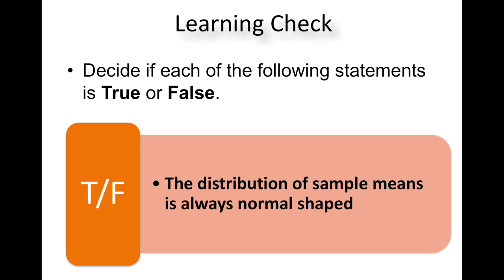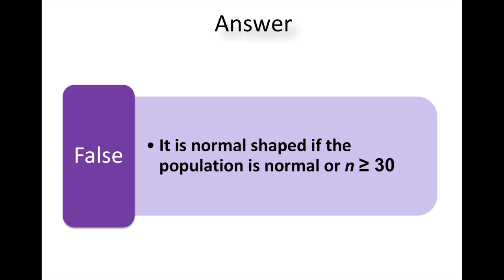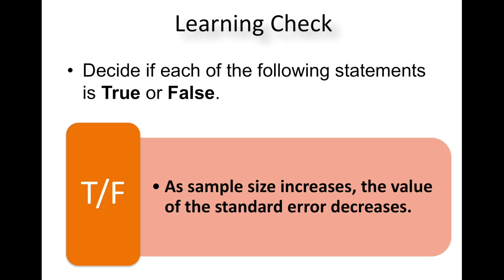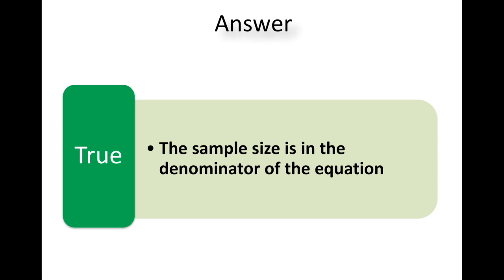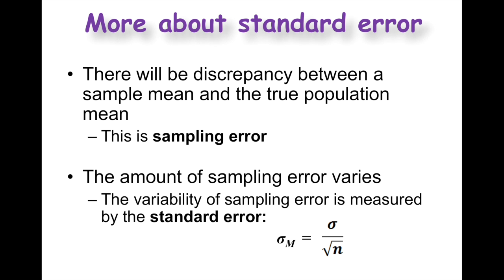True or false: the distribution of sample means is always normal shaped. False. It's normal shaped if the population is normal or the sample size is greater than or equal to 30. True or false: as sample size increases, the value of the standard error decreases. This is true. The sample size is the denominator of the equation, so as you create a larger sample size, your standard error gets smaller and smaller until you've studied the entire population, at which point you have zero standard error.